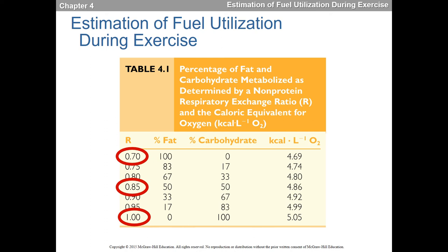Fats are really large, complex molecules. We have to get them into the cell through fatty acid translocase, do beta-oxidation, use carnitine palmitoyltransferase, and many other steps. Carbohydrates don't require all that. There are ten steps in glycolysis, which already seems like a lot, but there are far more steps in fat breakdown than in carbohydrate breakdown.